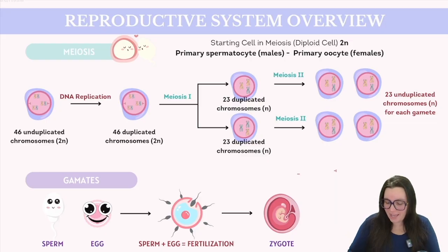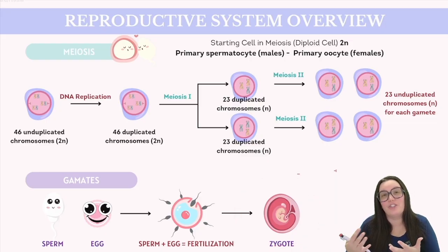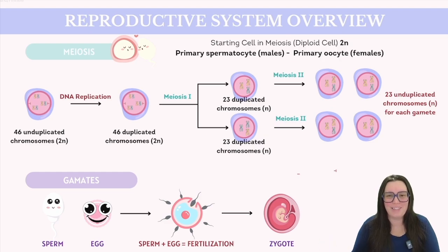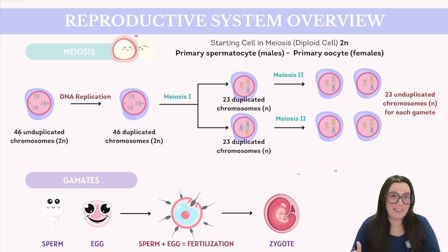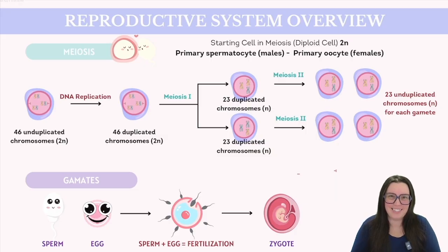This fusion forms a zygote, which embarks on a journey of embryonic development, eventually leading to the birth of a new human being. Given that the reproductive systems of males and females exhibit significant differences, it's most effective to study them independently. Let's begin by exploring the male reproductive system.